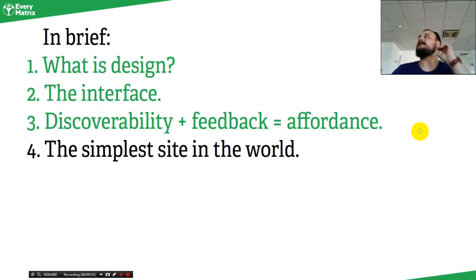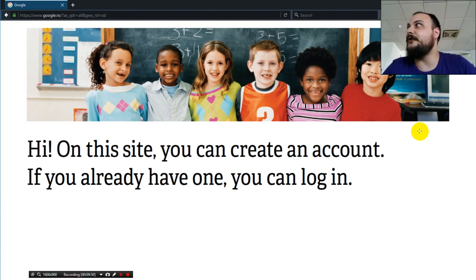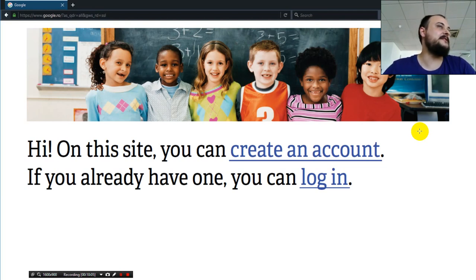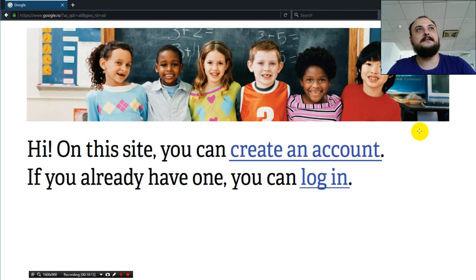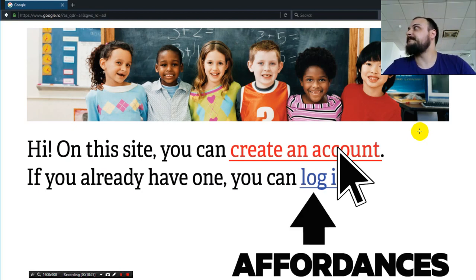Let's talk about the simplest site in the world. This is a banner, two paragraphs, and it says: 'Hi, on this site you can create an account. If you already have one, you can log in.' How can you do that? From the first glance, it's not clear. But what if you added a very simple visual cue — everybody knows how a link looks because of Google and not only Google. Now it's clearer because you've added affordances: a visual cue that something is actionable, and when you hover over it, you get feedback — this is clickable, this does something.